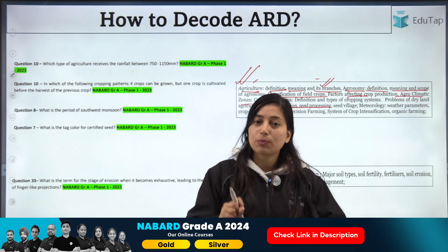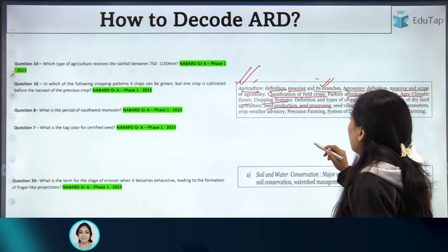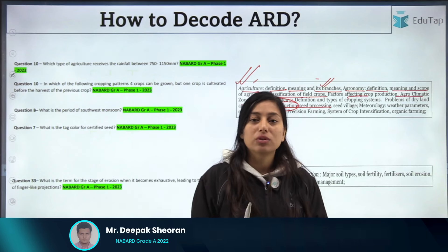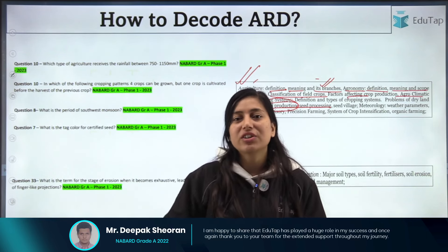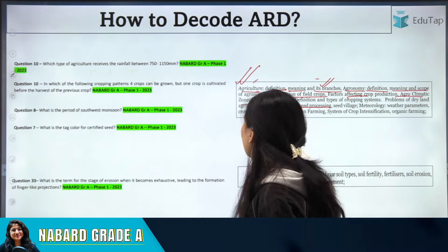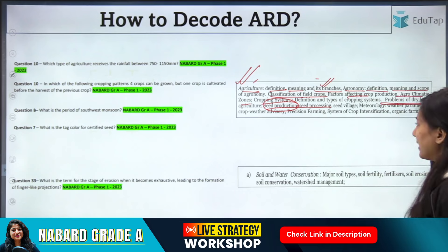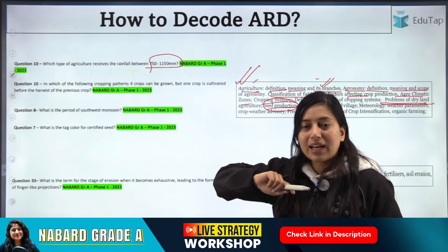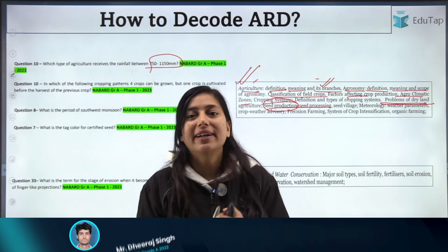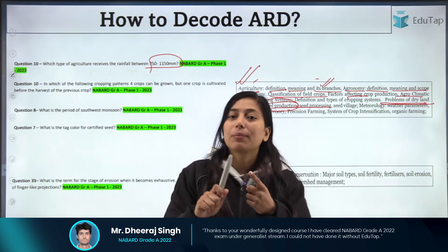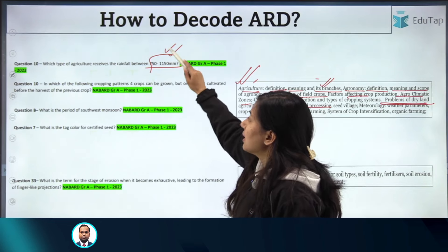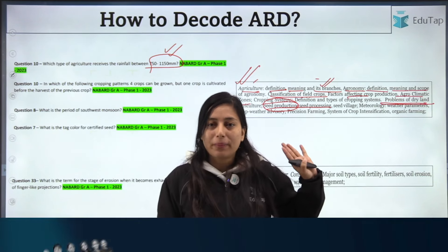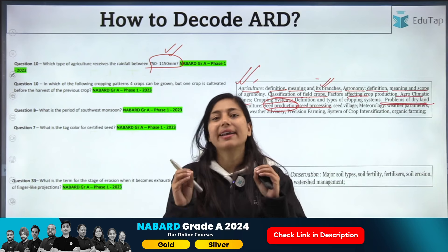Now, how detailed do your notes need to be? You don't need complete scientific knowledge about every topic — you just need a general idea. For example, there is a topic on problems of dryland agriculture, and a question was asked: 'Which type of agriculture receives rainfall between 750 to 1150 mm?' When you study dryland agriculture, you will learn about its categories, and from there you'll find which type falls under that rainfall range. You just need that general level of understanding — no extreme depth is required.